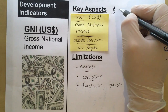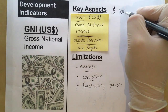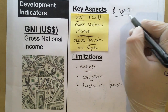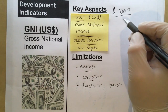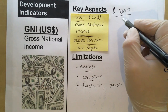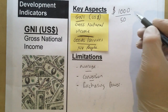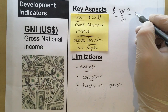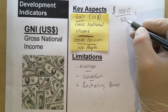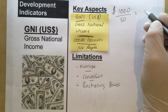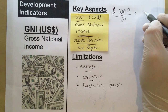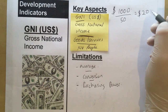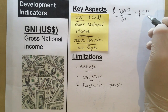Let's say in a country $1,000 is produced in goods and services, and there are 50 people in that country. That gives a GNI of $1,000 divided by 50, which is $20 per person per year.